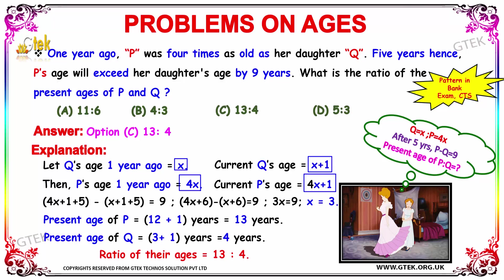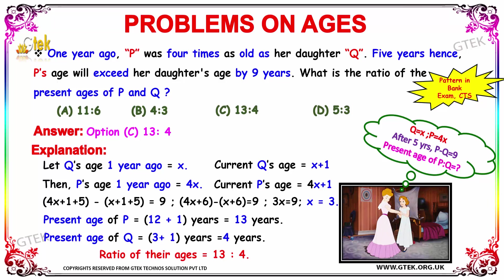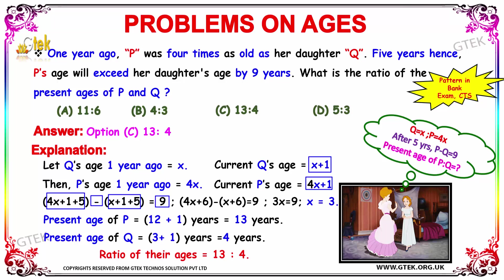We have to find the ratio of the present ages. And we are given that the difference of their ages 5 years hence will exceed the daughter's age by 9 years. So 5 years hence, Q's age will be X plus 1 plus 5, and P's age will be 4X plus 1 plus 5. And it is given that their difference is equal to 9.